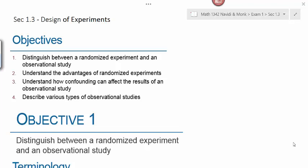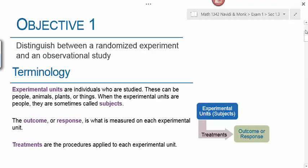Section 1.3 is Design of Experiments. The objectives we will cover in this lesson are to distinguish between a randomized experiment and an observational study, to understand the advantages of randomized experiments, to understand how confounding can affect the results of an observational study, and to describe various types of observational studies.